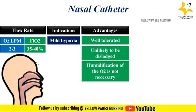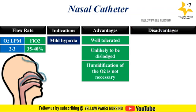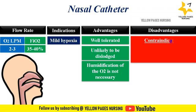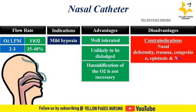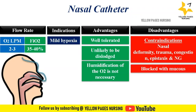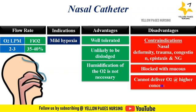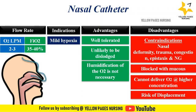Disadvantages include that nasal catheters are contraindicated in case of nasal deformity, trauma, congestion, epistaxis, and in the presence of a nasogastric tube. Nasal catheters can get blocked with mucus, cannot deliver oxygen at higher concentrations, and there is a risk of displacement into the esophagus.